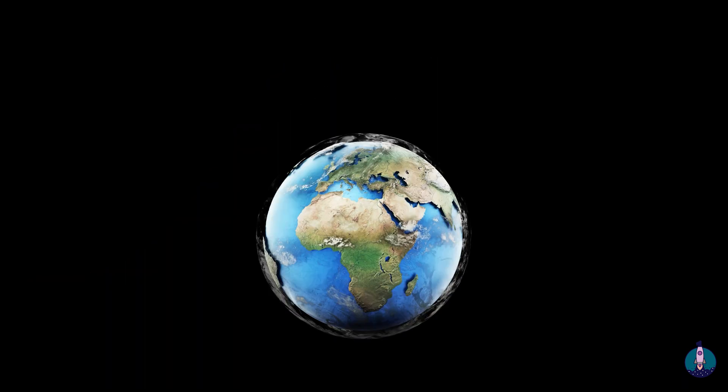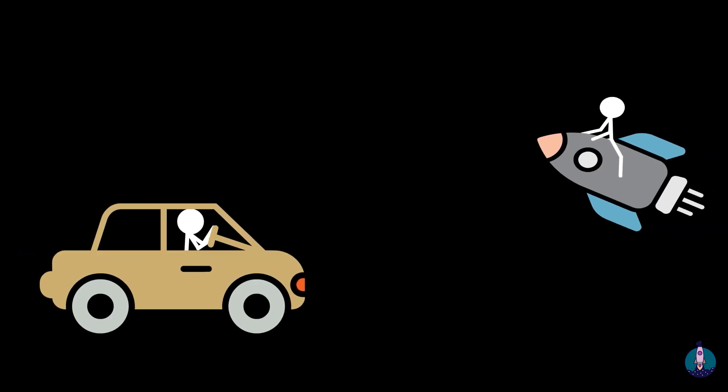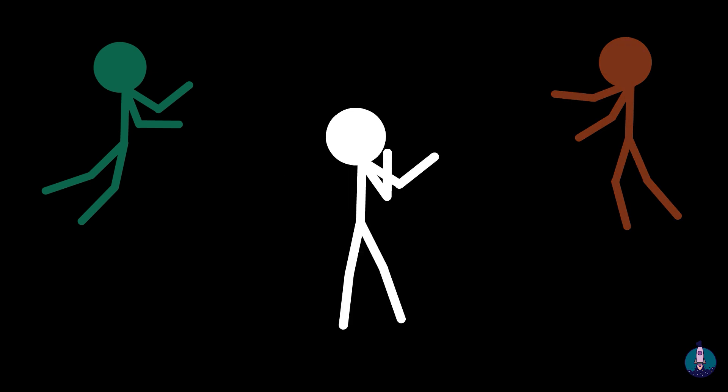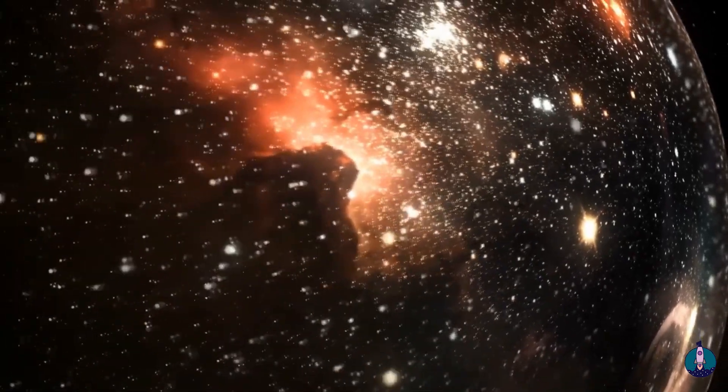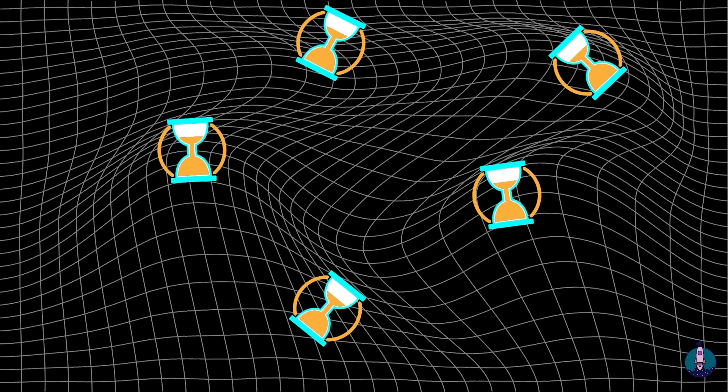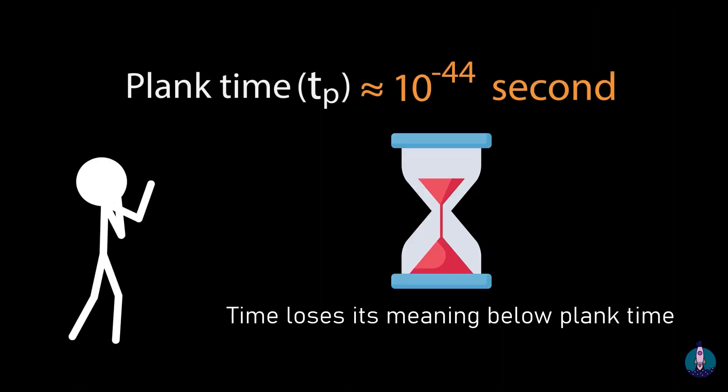There is no single time. Time passes at different rhythms according to place and according to speed. The difference between past and future does not exist in the elementary equations of the world. The notion of the present does not work in the vast universe. It fluctuates, emerges only through interaction, and ceases to have meaning below a certain fundamental scale.